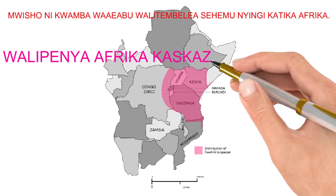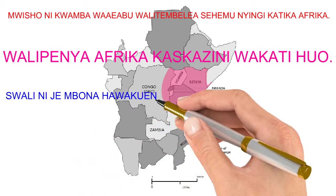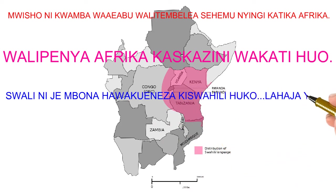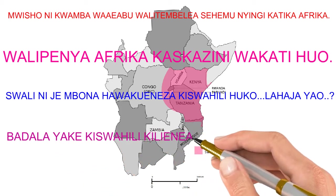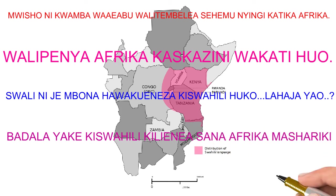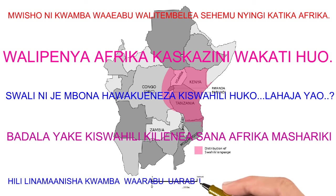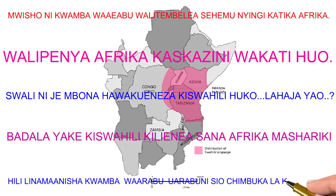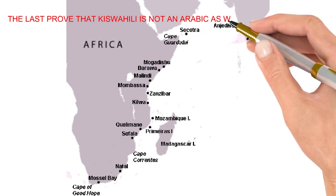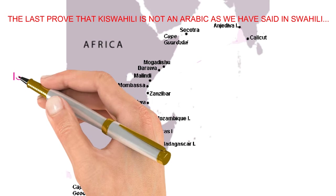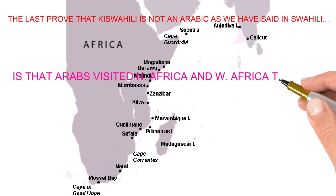According to our explanation, Kiswahili is not an Arabic language because even before the coming of the Arabs on the East African coast, the Kiswahili language was there — it was used in conducting business activities among the people living on the East African coast. Tunasema kwamba haikuwa sawa kusema kwamba lugha ya Kiswahili ililetwa na Warabu katika Afrika Mashariki, kwa sababu lugha ya Kiswahili ilikuwa inatumika katika shughuli za kibiashara pale katika pwani ya Afrika Mashariki.